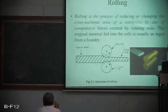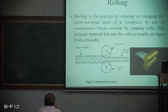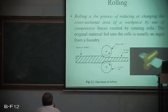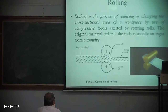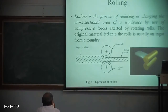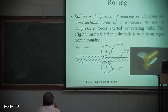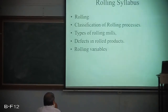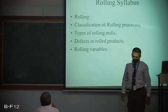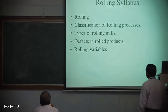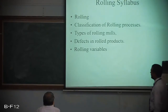You can see in a video that metal is continuously fed between two rollers and flattened — the cross section gradually reduces as it passes between the rolls, just like dough rolled between a flat plate and rolling pin. In this rolling chapter, we will discuss the introduction, classification of rolling process, types of rolling mills, defects in rolled products, and rolling variables.